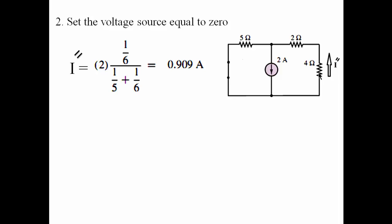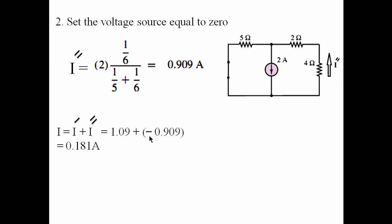The direction of the current that results from the current source is upwards, which is opposite to the direction of the current that results from the voltage source. And that's why we added this minus sign here to the value of the current that results from the current source, because the direction is opposite. And this current here is the current that results from both the voltage and the current sources.